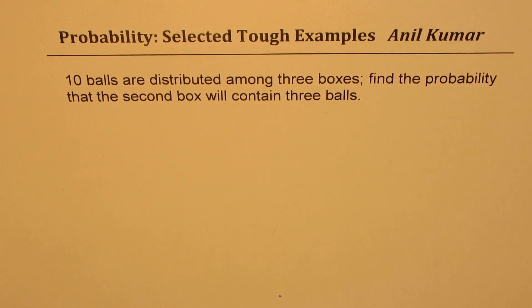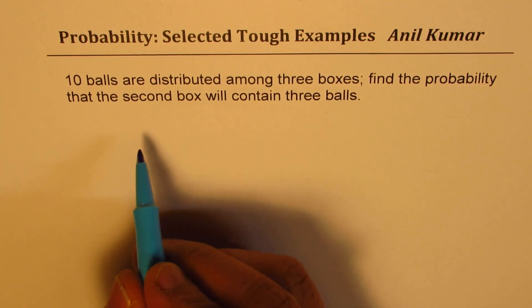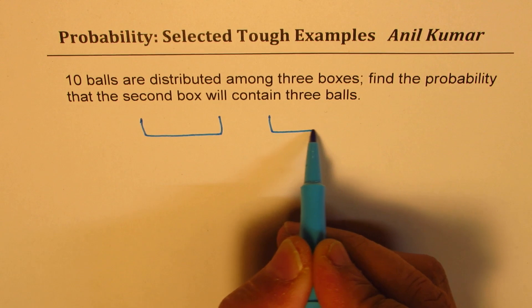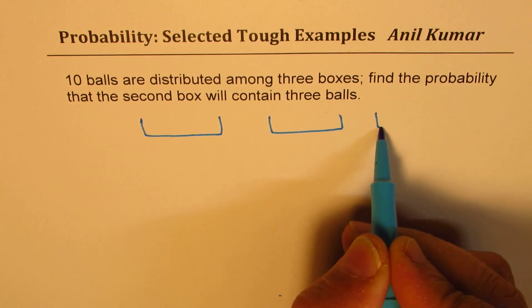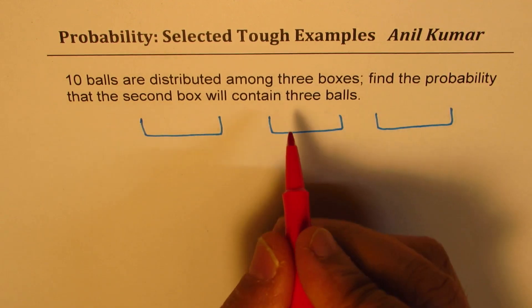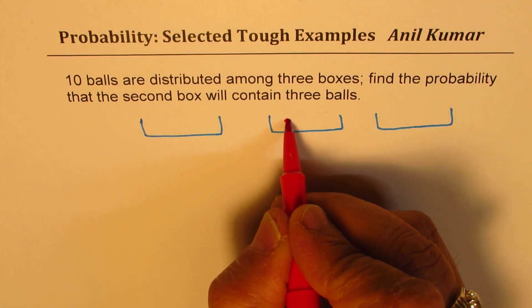The question here is: 10 balls are distributed among 3 boxes. Find the probability that the second box will contain 3 balls. In this particular case, imagine that we have these 3 boxes, and we need to find the probability that the second box has 3 balls.